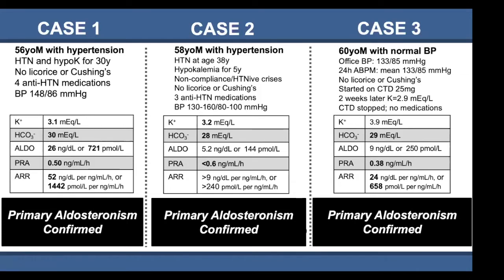These three cases highlight the spectrum of primary aldosteronism. Case 1 is a very severe, overt case that is rarely diagnosed despite how obvious it is. Case 2 is another overtly presenting case that would frequently be erroneously excluded. Case 3 is someone who was almost never thought to have primary aldosteronism, yet does have a form of it.